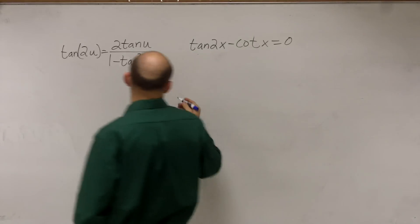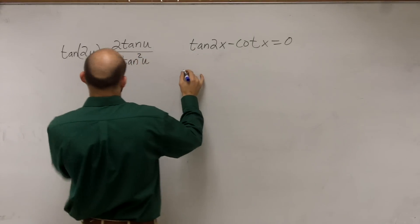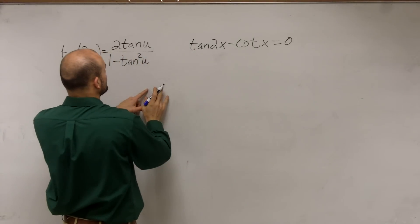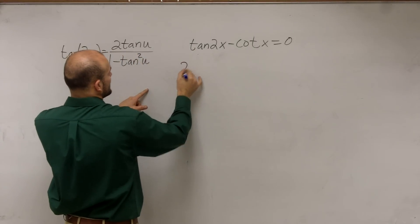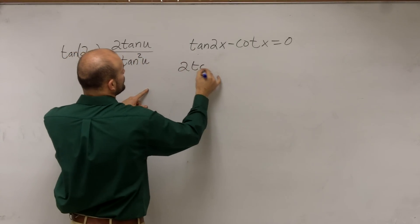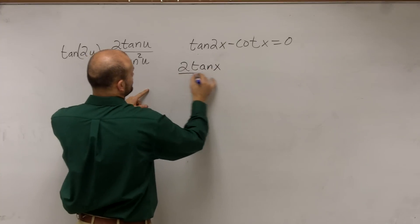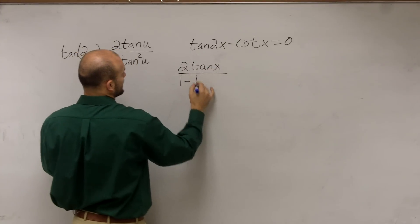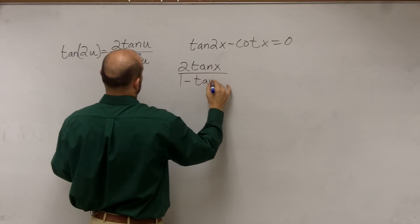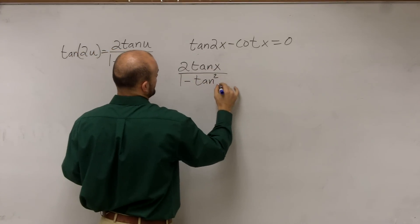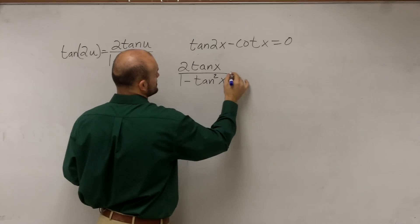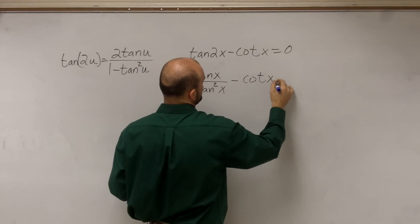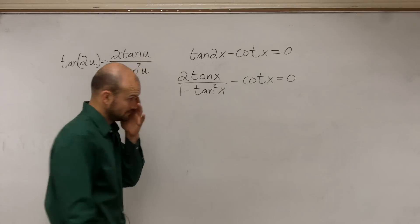So that's what we're going to insert. Rather than tan of 2x, I'm going to say 2 tan of x over 1 minus tan squared of x, minus cotangent of x equals 0.